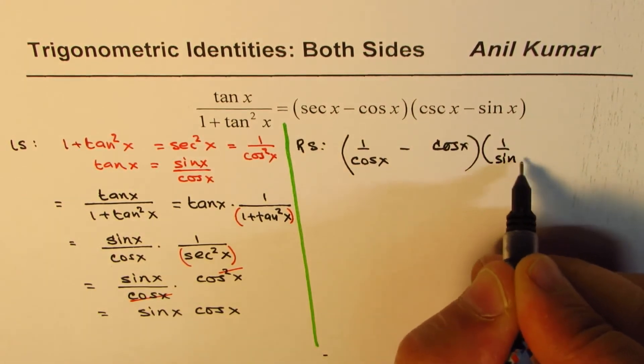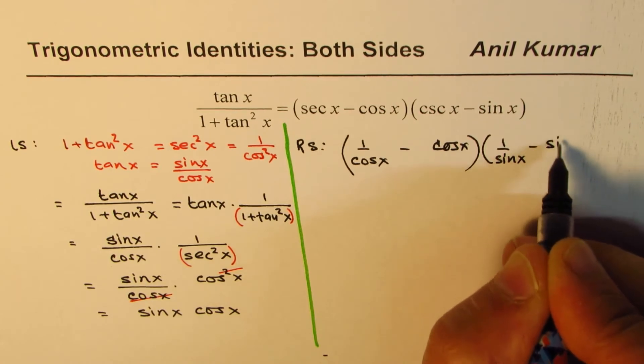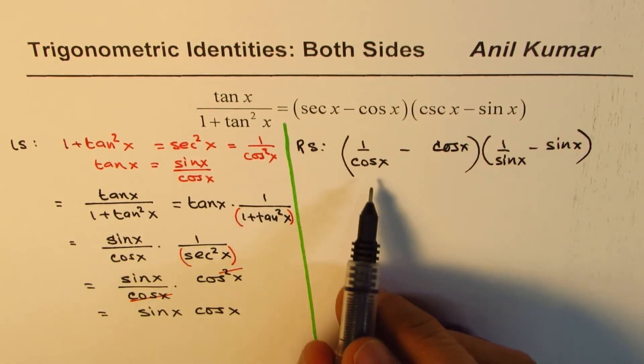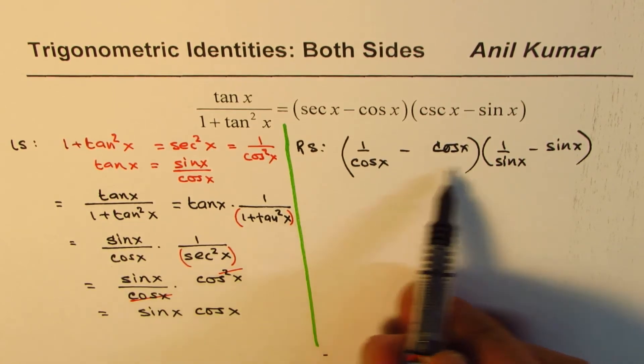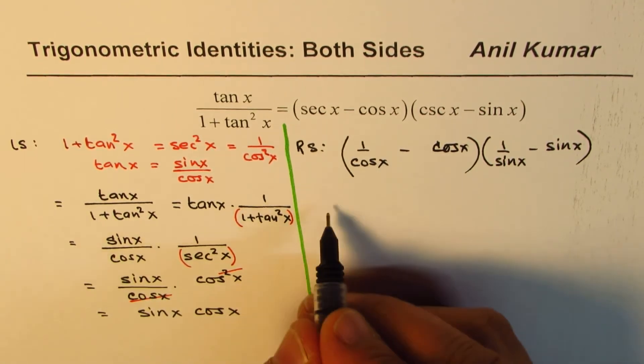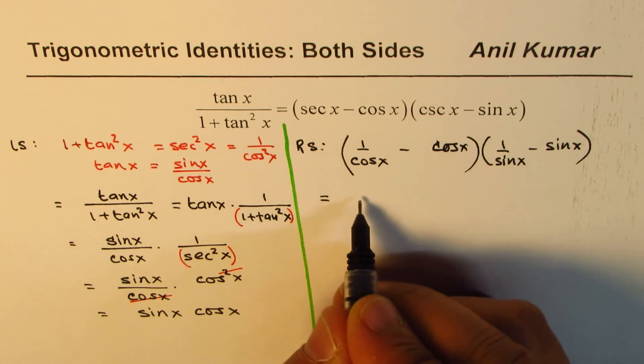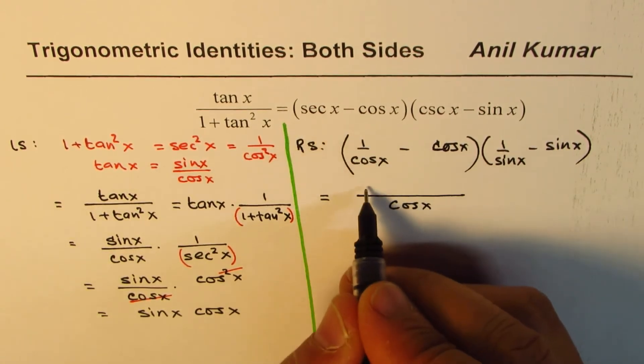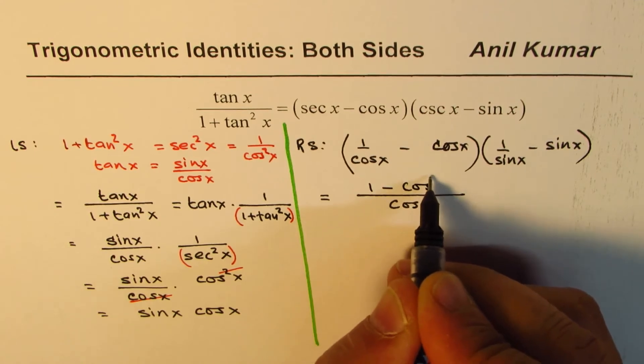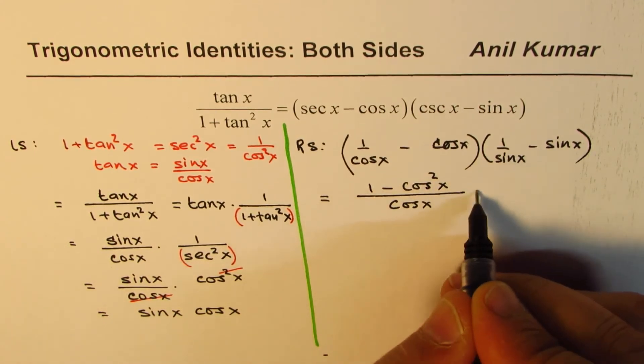Now we can have sin x cos x in the denominator, okay? So we write this portion, the first one, as cos x times 1 minus cos square x, and this portion could be written as